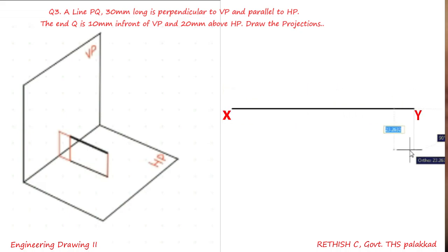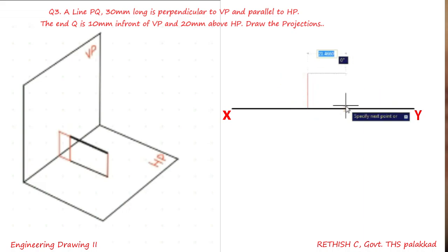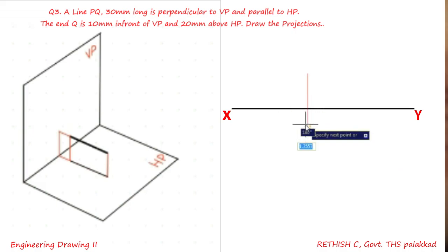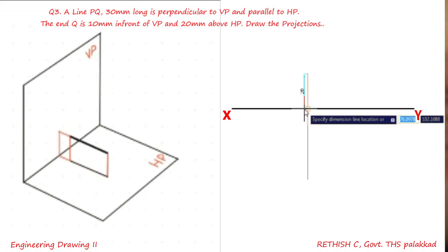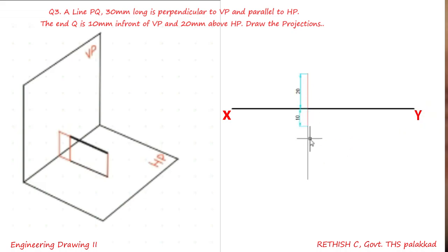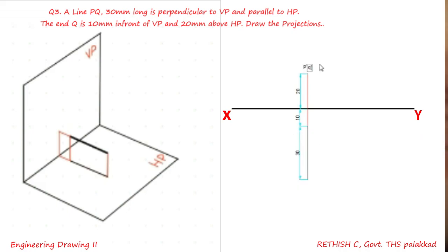Draw the XY line. As the point is 20mm above HP, draw a vertical line above HP with 20mm, then draw 10mm below as a projector line. The top view is 30mm long. Do the dimensioning and name the front view as P' Q' and the top view as P and Q.